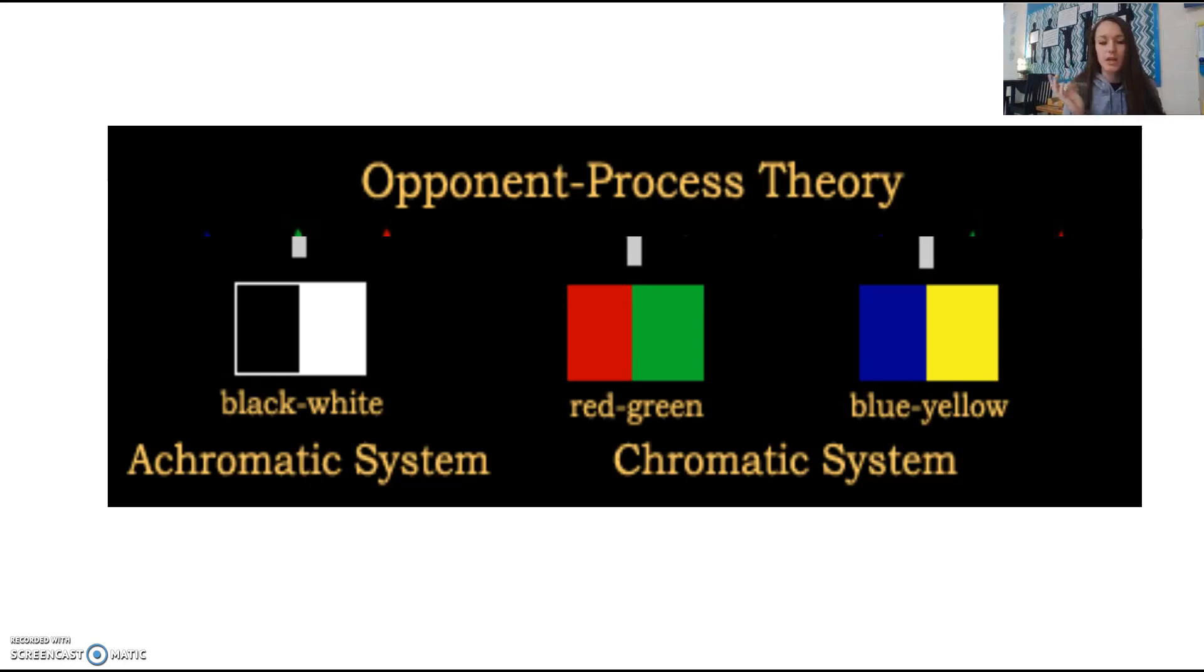Or if somebody has a blue-yellow color blindness, then they're seeing the world in reds and greens and blacks and whites, but they're not able to pick up that blue or yellow. Someone can have a full color blindness where their two cones, their red-green and blue-yellow cones aren't working, and so they are just picking up everything in black and white. So that helps us understand color blindness a little bit better.